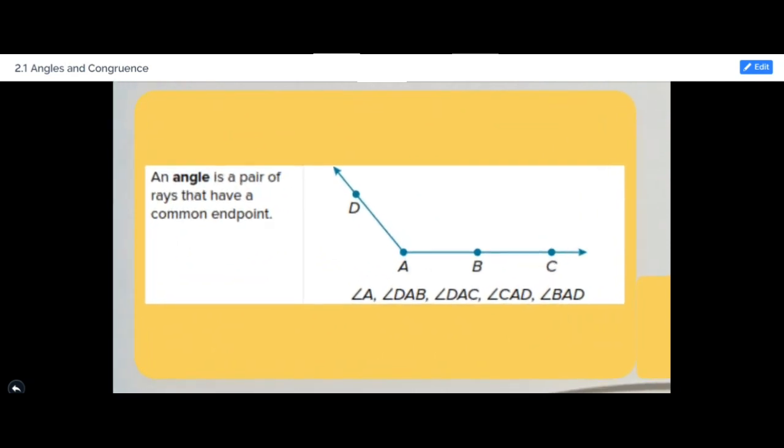An angle is a pair of rays that have a common endpoint. This endpoint is called the vertex of the angle.